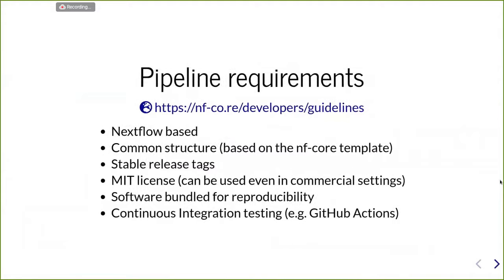For a pipeline to be an NF-Core pipeline, it has to be a Nextflow-based pipeline, because we are strongly tied to the Nextflow community. We want our pipelines to have the same command structure, which is based on the template that we provide. They need to have stable release tags — that helps us for reproducibility. We need to have an MIT license so it can also be used in commercial settings. We do strongly advise the software to be bundled for reproducibility, and we also advise the use of continuous integration testing.